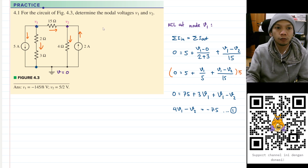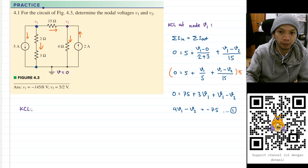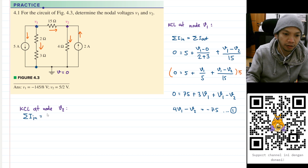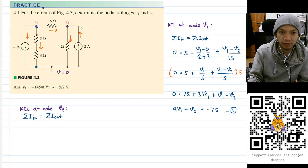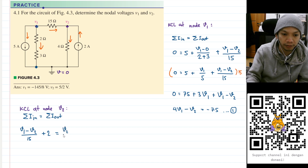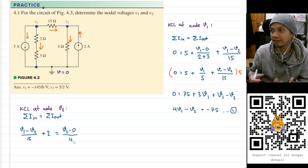Now let's move on to node V2. Applying KCL at node V2: the sum of the currents going in equals the sum going out. There are two currents going into V2 — the first is (V1 minus V2) divided by 15, and the second is 2 amperes. The current going out is V2 minus 0 divided by 4.